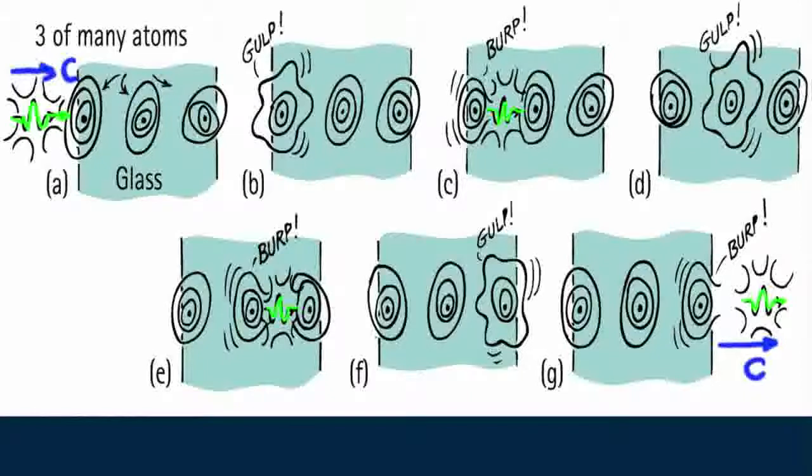Because of a time delay between absorptions and re-emissions throughout the glass, light travels at an average speed less than c. Even in air, the average speed of light is slightly below the speed we call c.